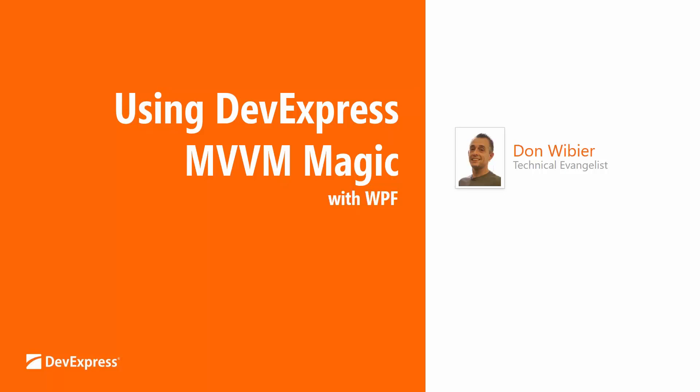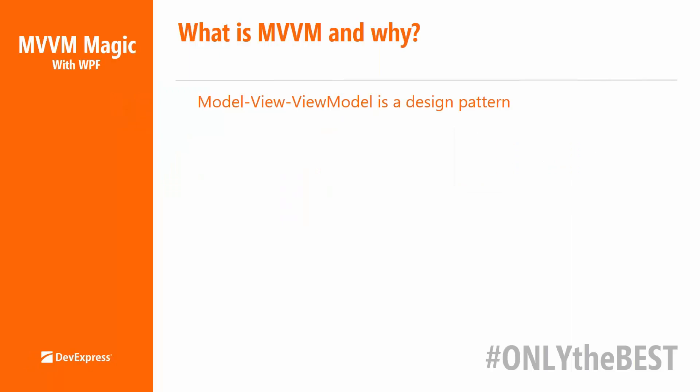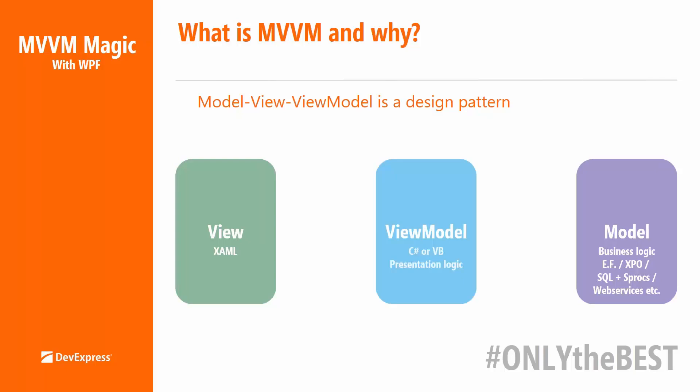Let me start with what is MVVM and why. MVVM stands for Model-View-ViewModel. It is a design pattern which enforces a couple of things in your application architecture to make your application more maintainable by separating the UI from the data persistence through a view model. You have your data access layer — that would be the model — which can be built with Entity Framework, our own XPO, direct SQL with stored procs, web services, or a combination of different things.